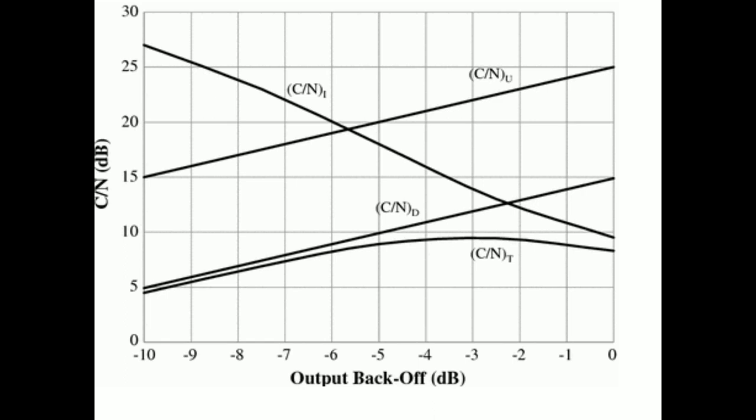The question also asks how intermodulation noise can be reduced. As already explained, intermodulation noise occurs because the system works in the nonlinear region, and by providing backoff we can keep the system in the linear region. This important plot shows the relation between signal to noise ratio and backoff. For intermodulation, a larger backoff gives a better signal to noise ratio — at minus 10 dB backoff, the C/N of intermodulation is very high.